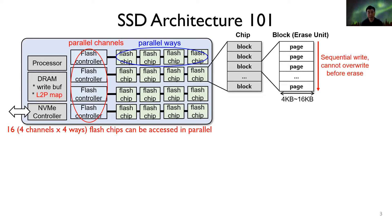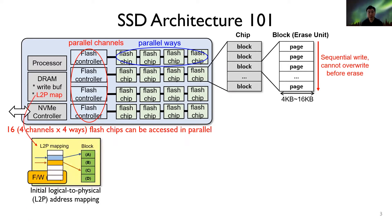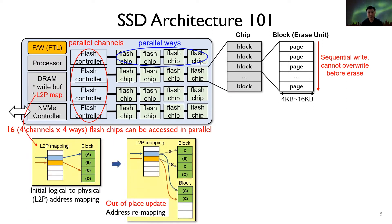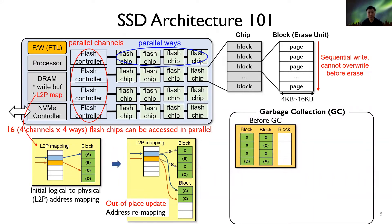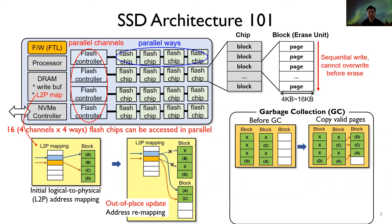Flash pages cannot be overwritten until the corresponding flash block is erased. Therefore, SSD adopts an out-of-place update scheme and uses a special firmware called the Flash Translation Layer to manage the logical-to-physical address mapping. FTL performs garbage collection to reclaim invalid flash pages, dispersing copies of all valid pages in victim flash blocks to an empty block.